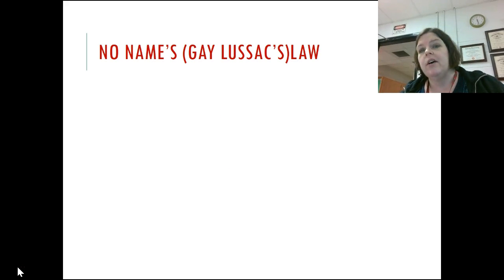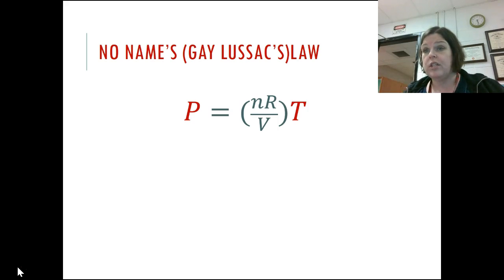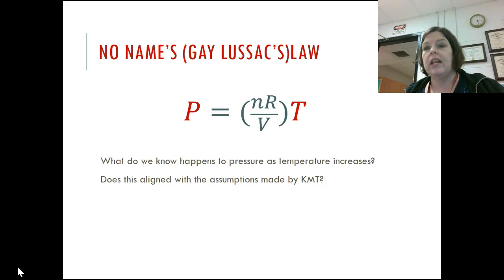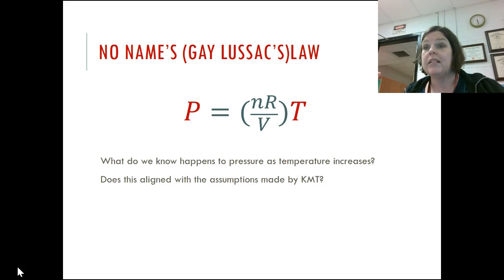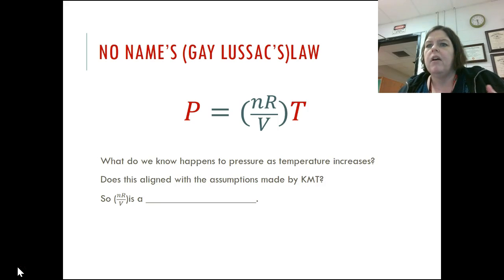In Gay-Lussac's Law — some people call it no-name's law — P is equal to NRV over T, where the number of moles and the volume are kept constant, and we're varying pressure and temperature. As temperature goes up, pressure goes up. This aligns with kinetic molecular theory because as temperature goes up, average kinetic energy goes up, meaning they're moving faster and colliding more with the sides of the container. The NRV part is a constant. We're looking at all these laws from the perspective of kinetic molecular theory.